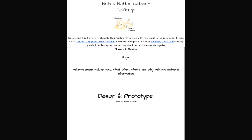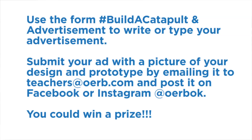I have an assignment for you. You're going to design and build a better catapult. Then you're going to write an advertisement for your new prototype catapult. Name your design. Make a slogan for it. Include information about your catapult — give the who, what, when, where, and why — and provide any information to sell your catapult. I am so excited to see your fabulous creations. Use the assignment form, build a catapult advertisement to write or type your advertisement. Attach a photo of your creative design and prototype to put on social media. Tag at OERBOK on Instagram and/or Facebook for a chance to win a prize. Thank you for tuning in today to learn about catapult design and engineering. I hope you enjoy designing, building, and testing your catapults. See you soon.